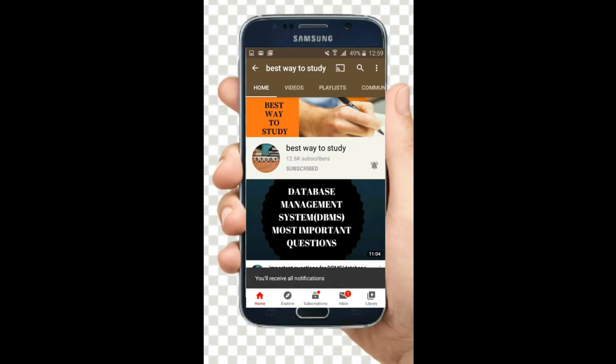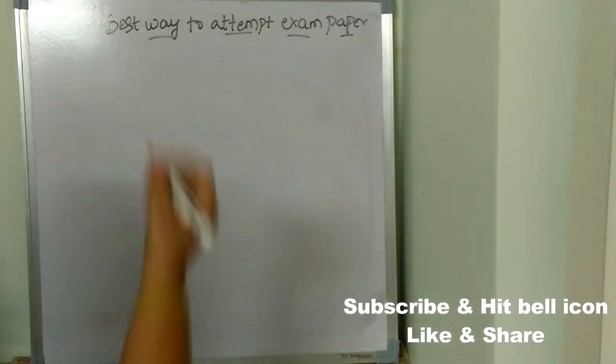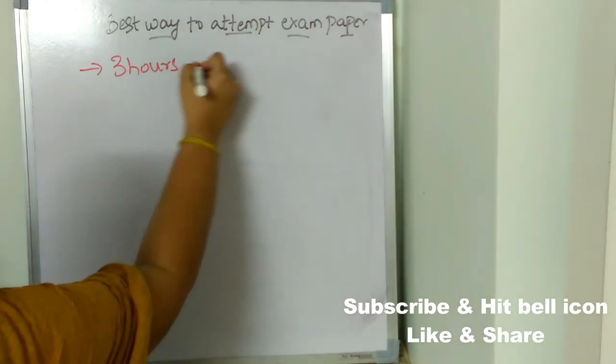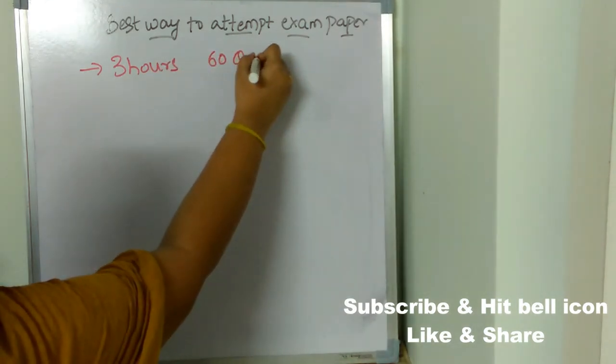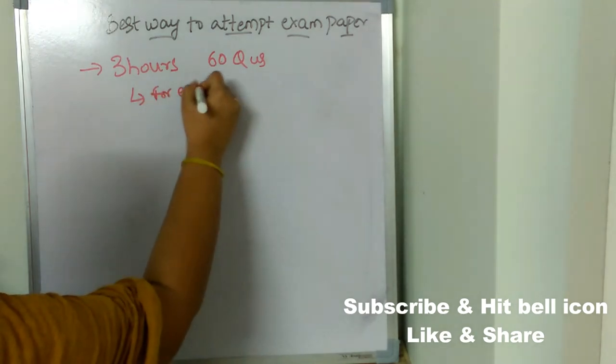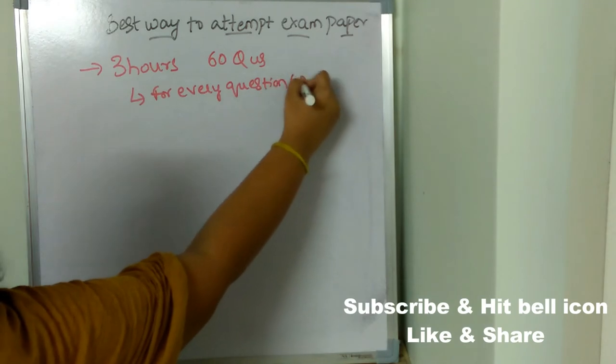Subscribe and hit the bell icon for more notifications. See what is the best way to attempt the exam paper. There are three hours of exam duration and 60 questions, so on average for every question spend 2.5 minutes.